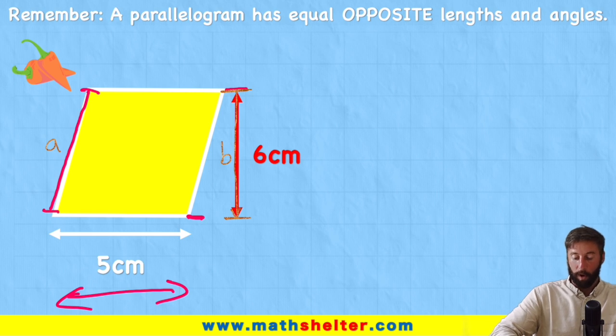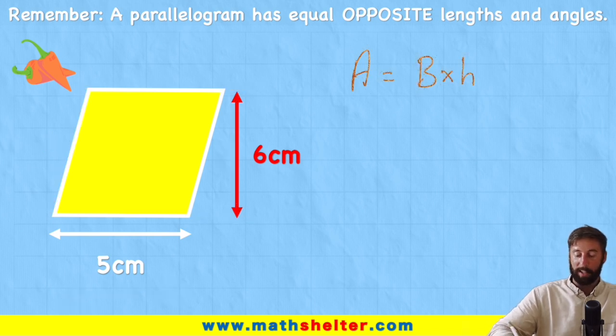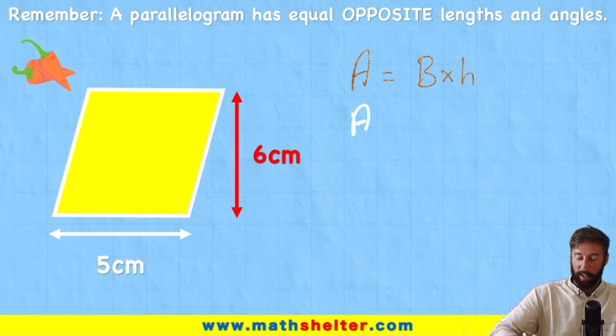So just like before, the formula for working out the area of a rhombus when we're given the base and the height is simply area equals base times height. So again let's start plugging in some numbers. And I have area equals base which is 5. And height which is 6.